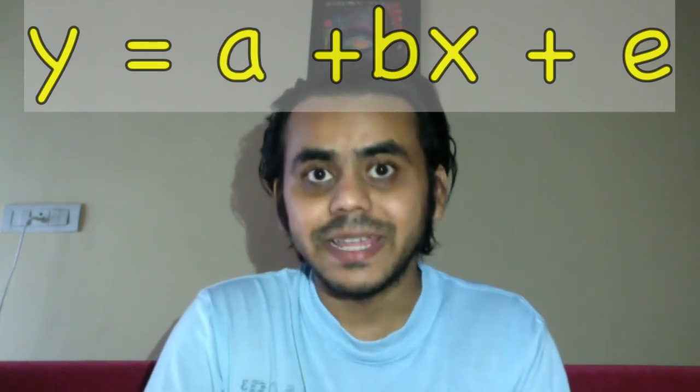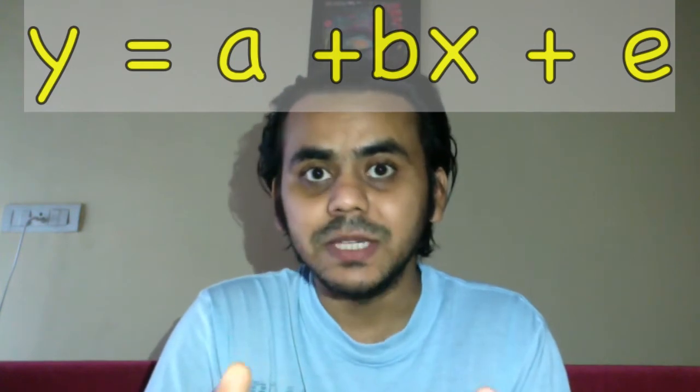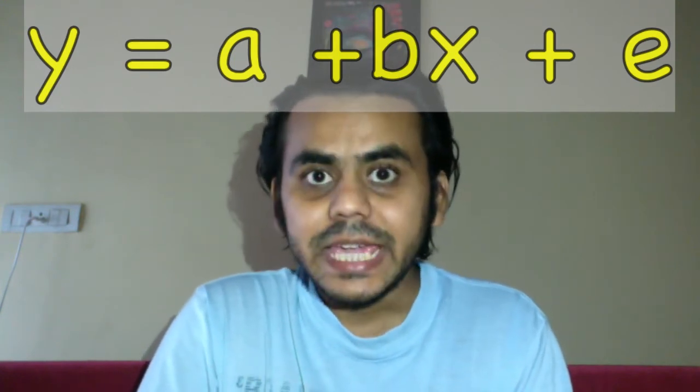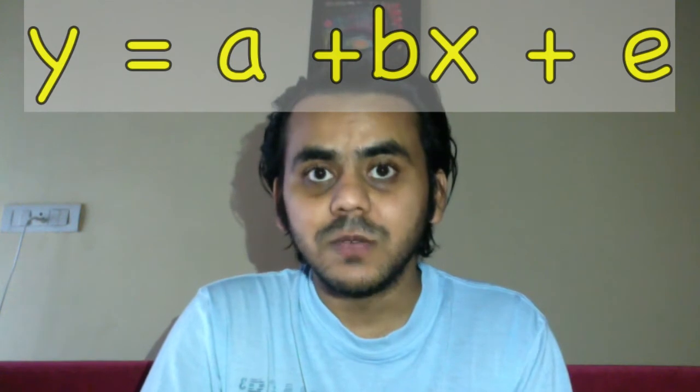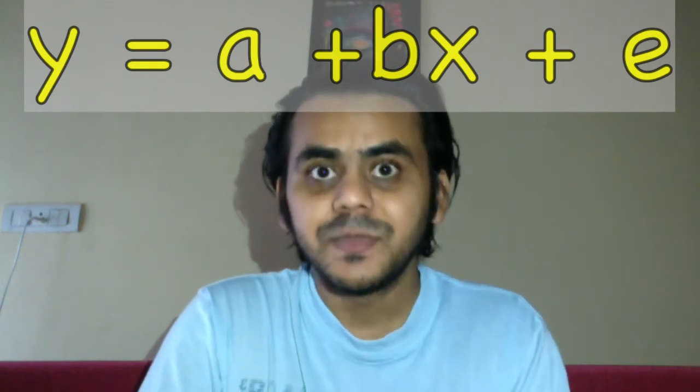Now what are a and b and e? A and b are parameters which we need to estimate, and e is an error term.